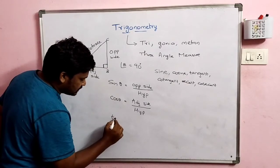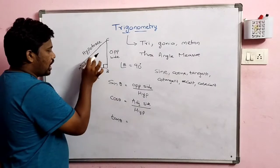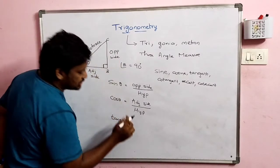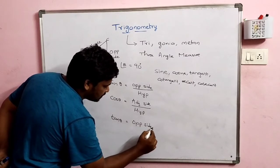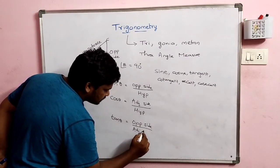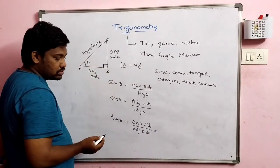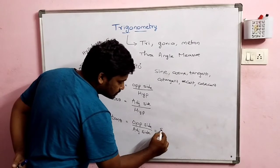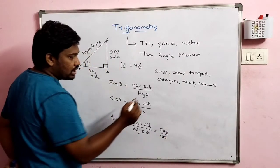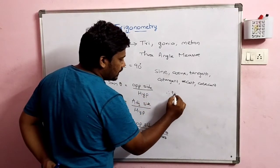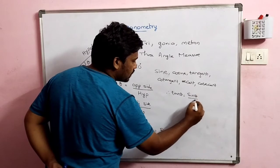Next, tan theta. Tan theta equals opposite side divided by adjacent side. You can also say tan theta equals sin theta divided by cos theta. Therefore, tan θ = opposite / adjacent = sin θ / cos θ.